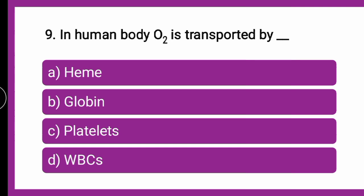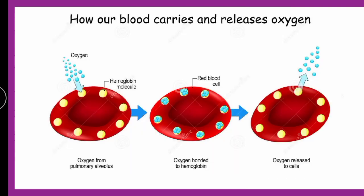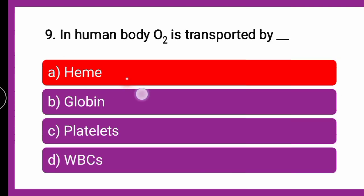The next question is: in the human body, oxygen is transported by dash — whether by heme, globin, platelets, or WBCs? In the RBC, the oxygen is captured by the heme portion and delivered to the cells. So the heme part of hemoglobin is responsible for carrying and transporting oxygen.